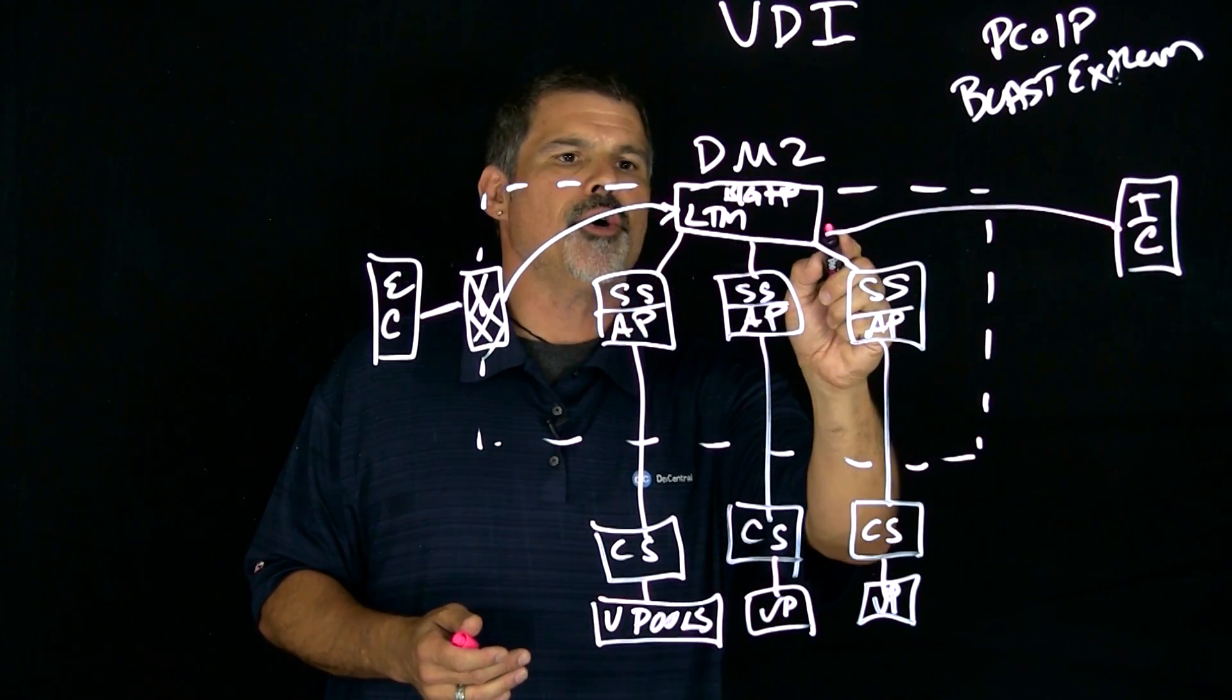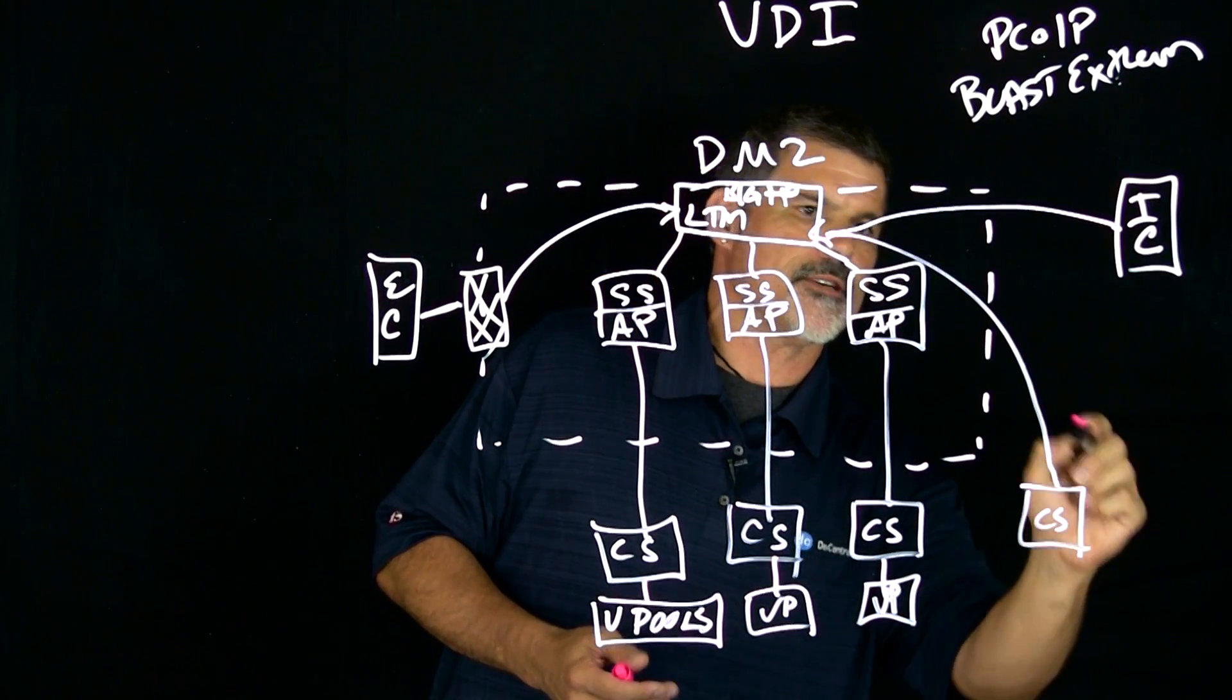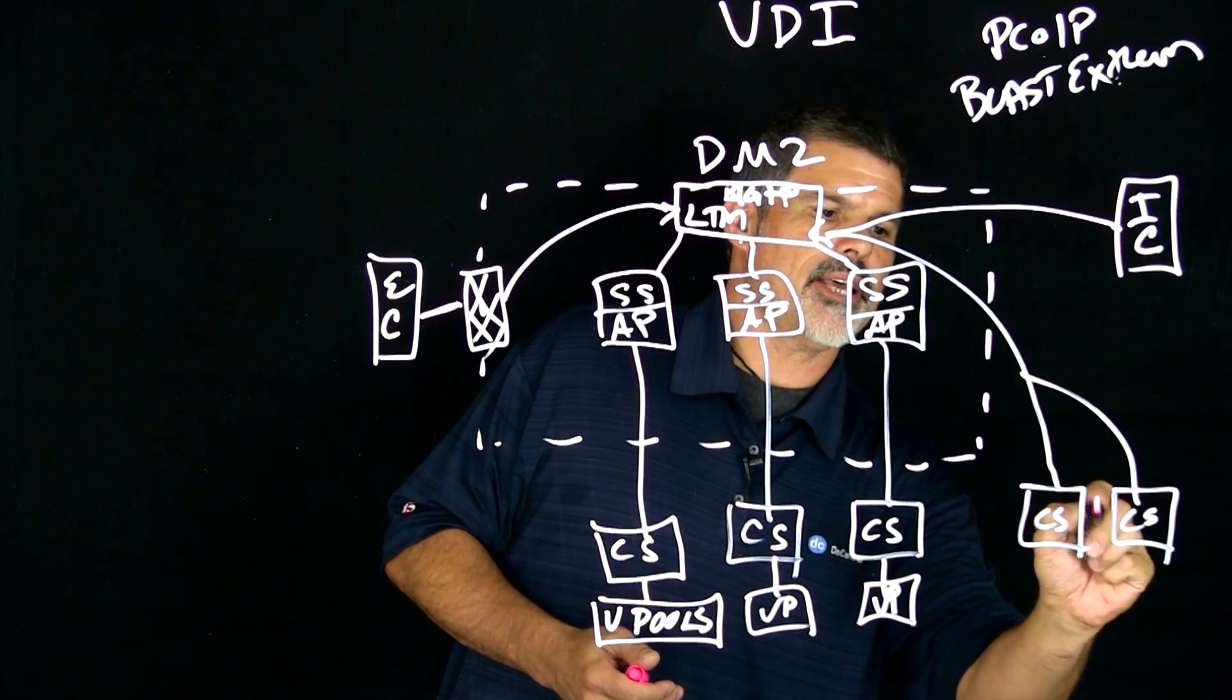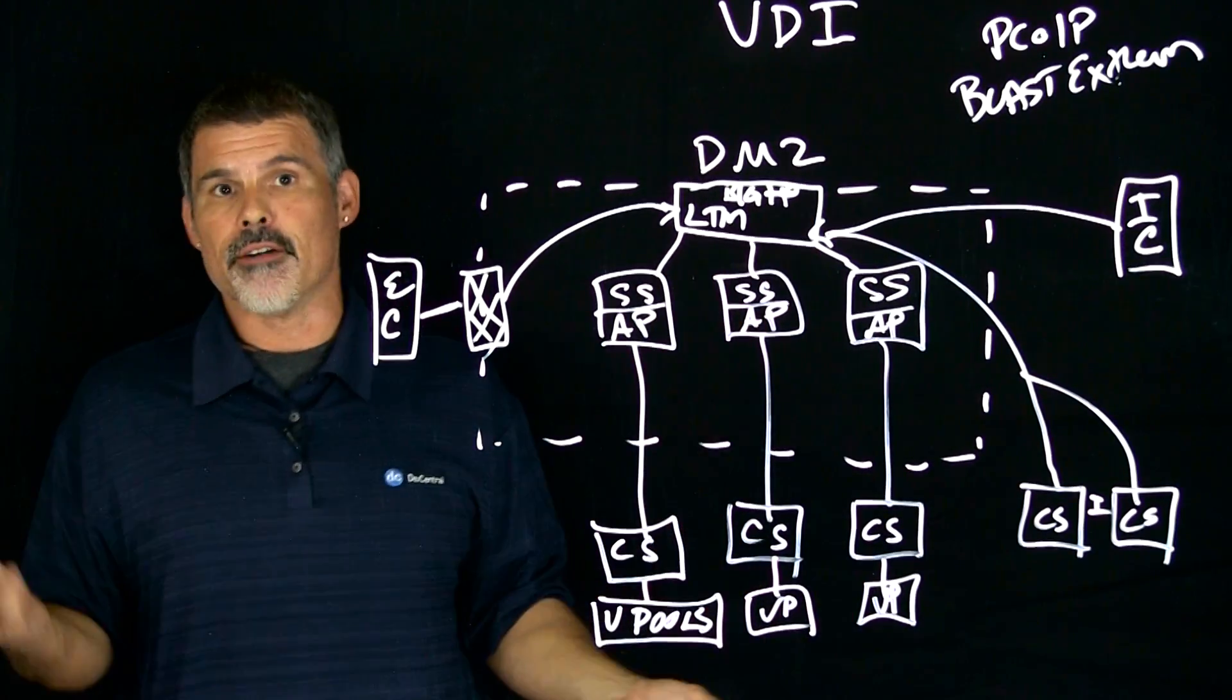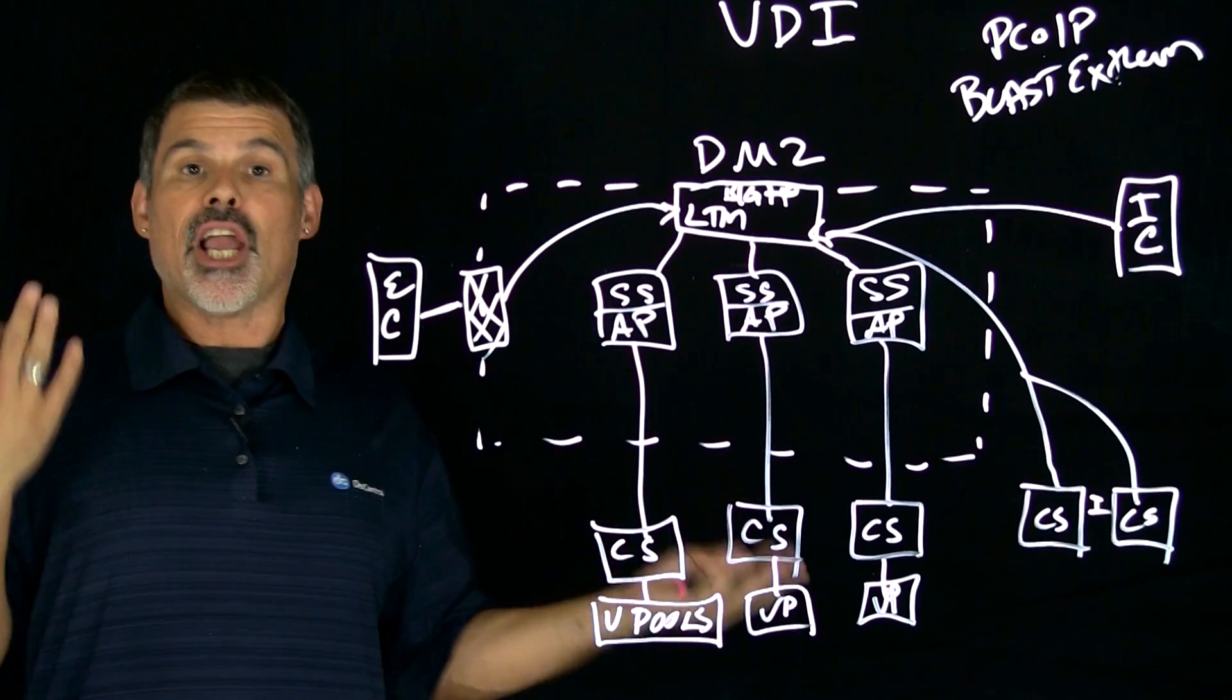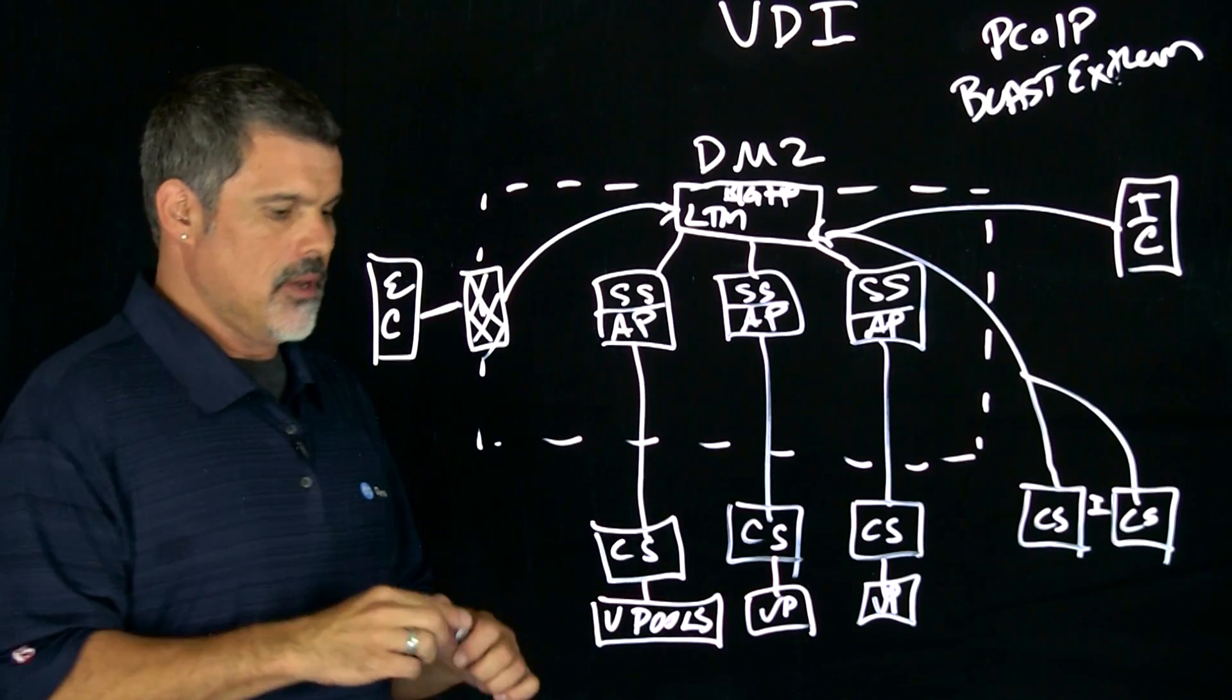The internal clients will hit the LTM, but then they just come over here. They don't have to go through the security servers. And they get to their internal connection servers. And then they get access to their virtual desktops. Now this is your typical diagram topology with Big IP LTM in the mix.